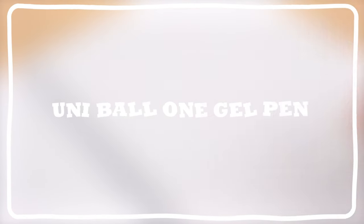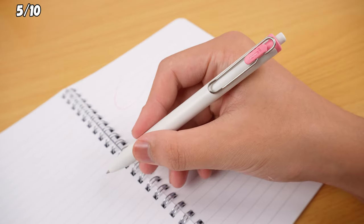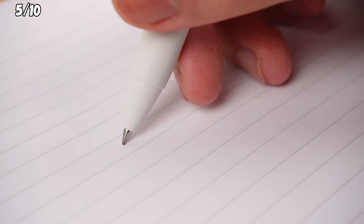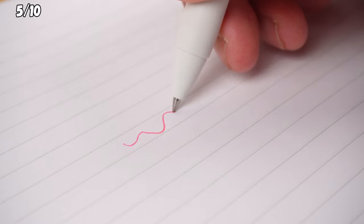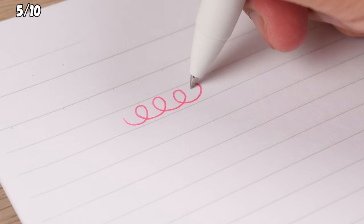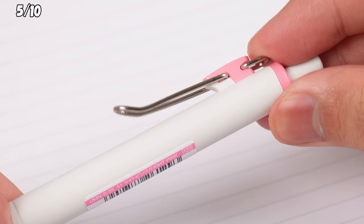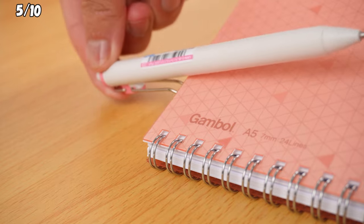If you're a fan of that light pink vibe, you gotta check out the Uniball One Gel Pen 0.5mm Light Pink. It rocks this vibrant light pink ink. Plus, the quick-drying ink won't bleed or fade over time. And, to top it off, it comes with a slick metal clip, making it a breeze to secure on the cover of your notebook.